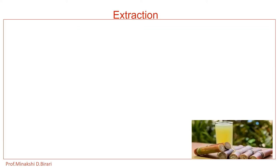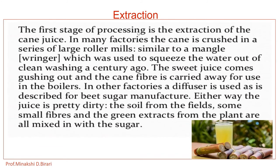The next step is extraction of juice. The first stage of processing is the extraction of the cane juice. In many factories, the cane is crushed in a series of large roller mills similar to a mangle, used to squeeze water out of washing. The sweet juice comes gushing out and the cane fiber is carried away for use in the boilers. In other factories, a diffuser is used as described for beet sugar manufacture. The juice is quite dirty — soil from the fields, small fibers, and green extracts from the plant are all mixed in with the sugar. Harvested sugarcane must be washed with water before milling to eliminate soil, rocks, and trash.